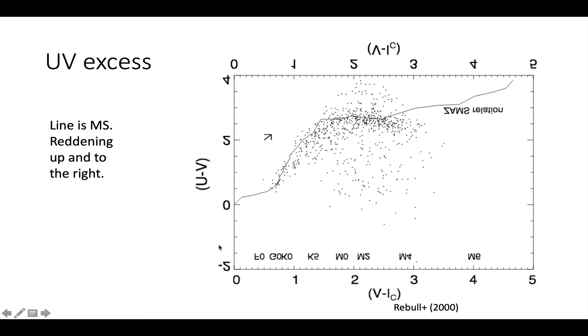So I'm going to flip it over and then fix the labels for you. So you've got U minus V. Red is at the top and blue is at the bottom. And then I've got V minus I. Blue is on the left and red is on the right.